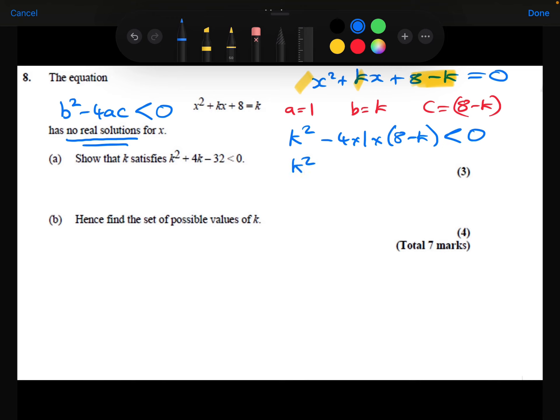k squared, I can't simplify that. The minus 4 times 1 is minus 4. And now let's expand those brackets. The minus 4 times the 8 is minus 32. The minus 4 times the minus k is plus 4k. And now I'm just going to swap the 4k and the minus 32 around. And we can see that's what we needed to show.